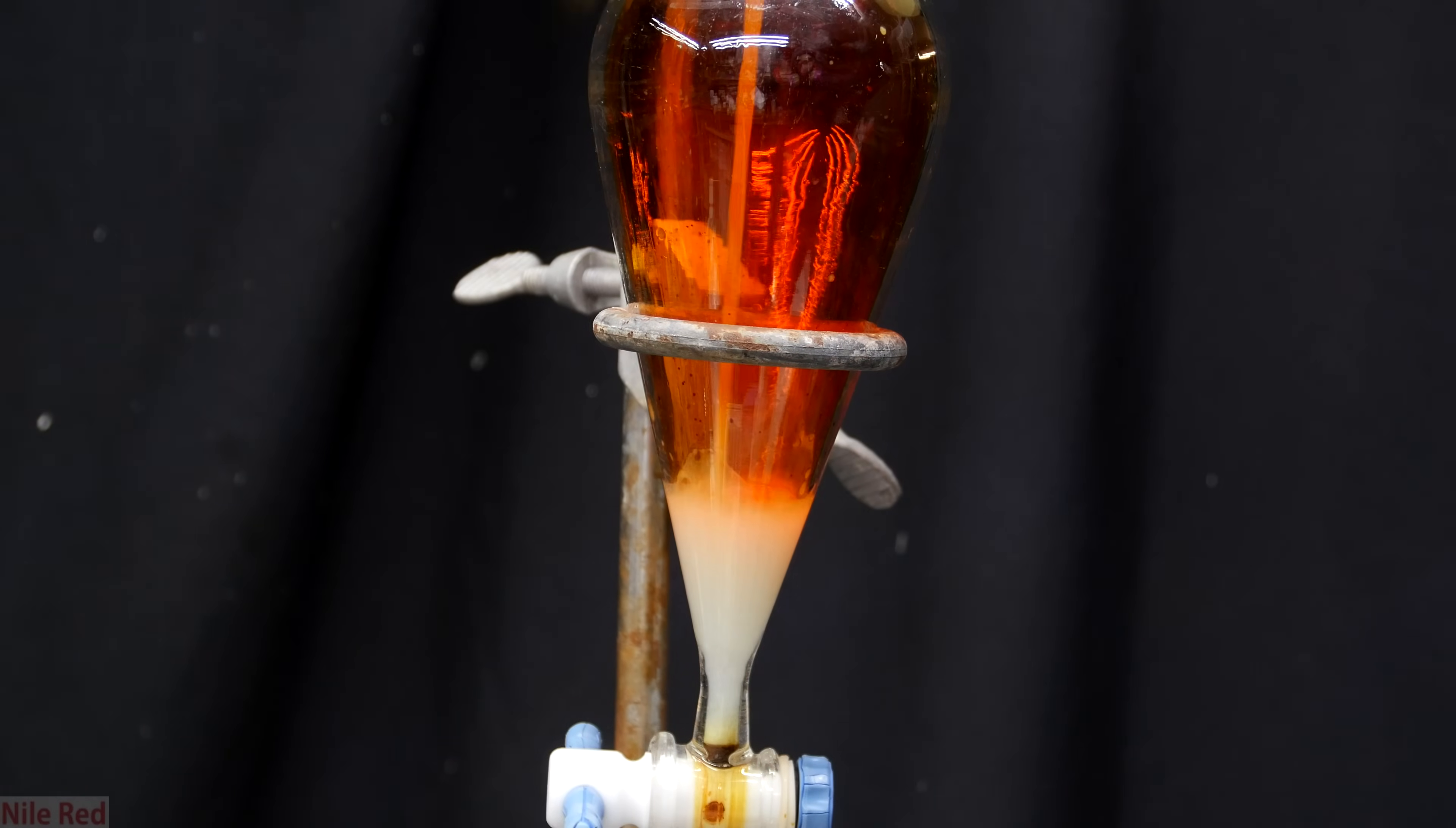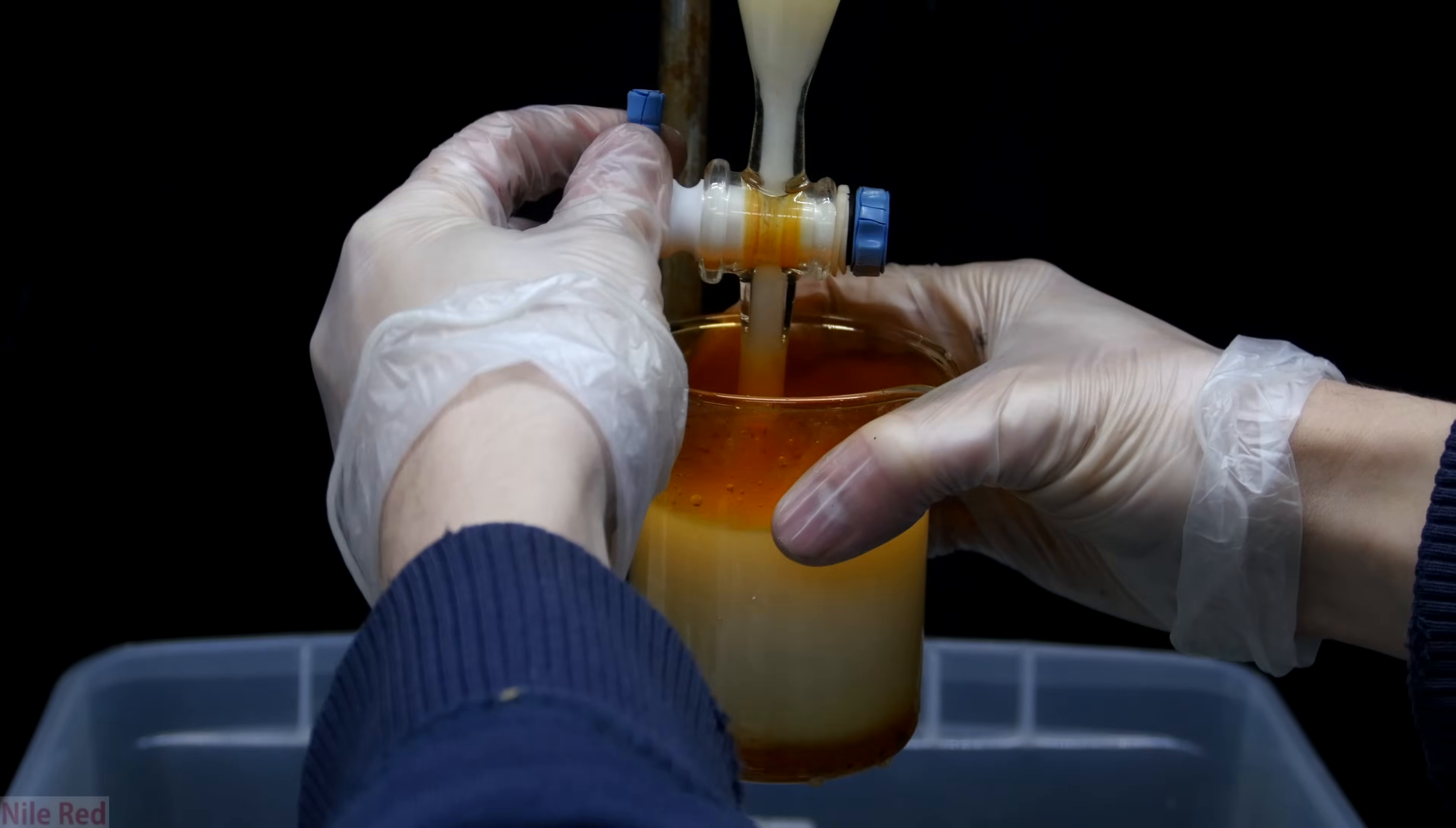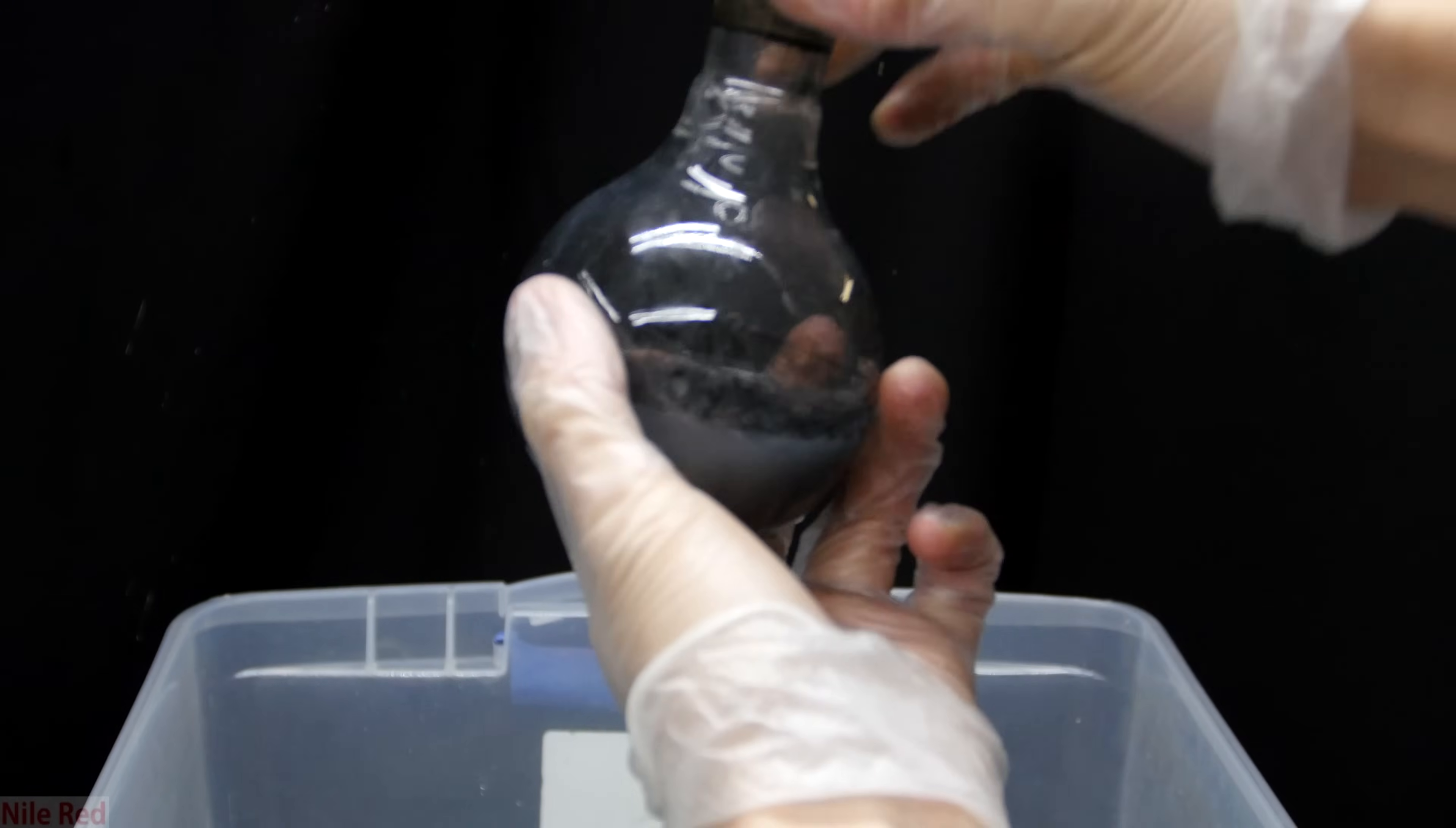To clean up the separatory funnel, I pour in some more solution of sodium thiosulfate. I forgot to mention it earlier but the reason the sodium thiosulfate solution becomes opaque is because it reacts with sulfuric acid to release elemental sulfur. The sodium thiosulfate solution in the separatory funnel is then drained into the beaker to neutralize any bromine that was in there. I also use some sodium thiosulfate to clean out the receiving flask that we used in the distillation. You can see that after a cap and shake it, everything becomes totally colorless indicating that all of the bromine has been neutralized.